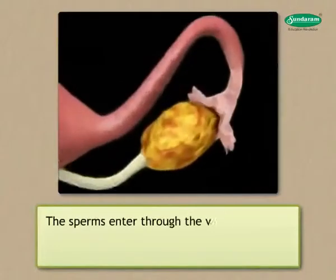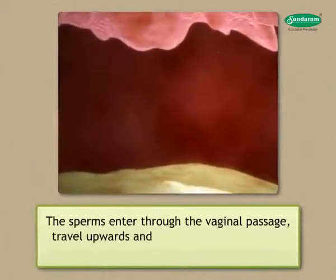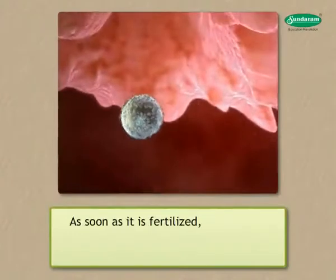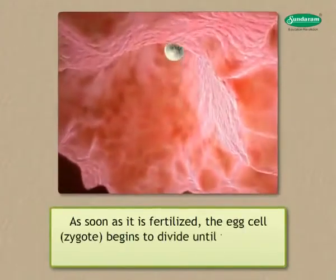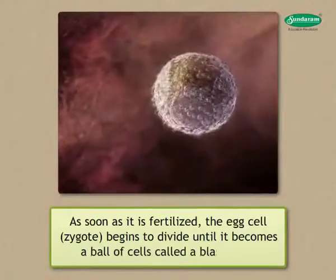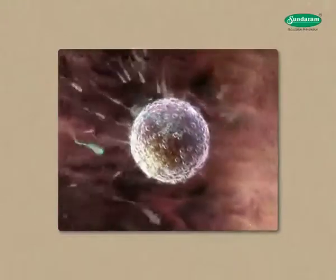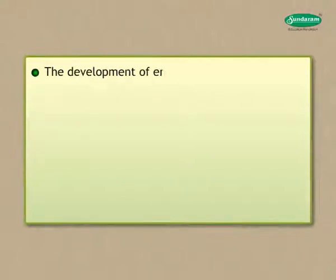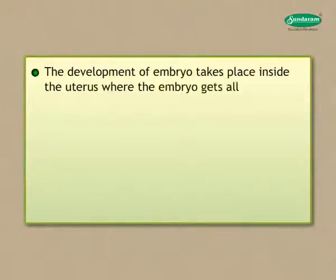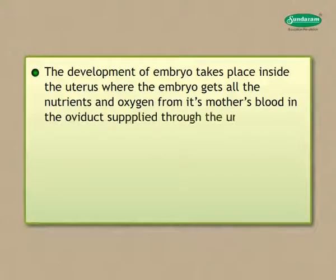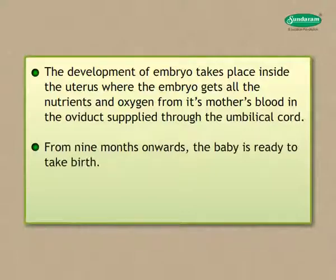During fertilization, sperm enter through the vaginal passage, travel upwards, and reach the oviduct where they may encounter the egg. As soon as the egg is fertilized, the zygote begins to divide until it becomes a ball of cells called a blastocyst. This ball then implants itself in the wall of the uterus. The embryo develops inside the uterus, receiving all nutrients and oxygen from the mother's blood through the umbilical cord.